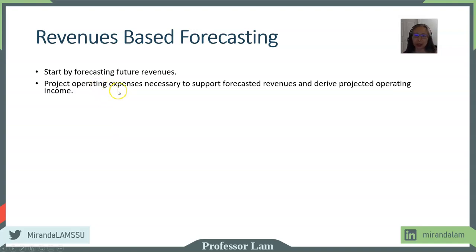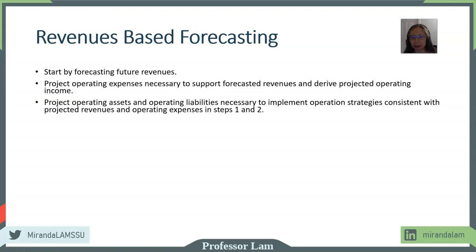Whether your firm has a highly automated operating process — meaning more fixed costs versus variable costs — or other industry characteristics, you must account for those. Once you have forecasted revenue and operating expenses, you can compute operating income. That's the first half of the income statement. Once you have that, you can project operating assets and operating liabilities, which should be consistent with what you projected in the earlier steps.